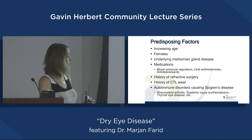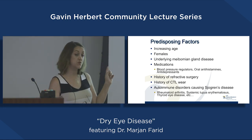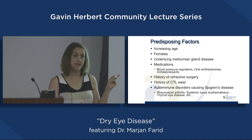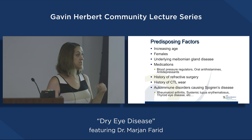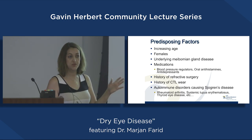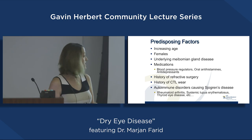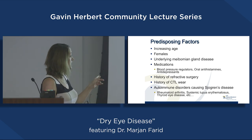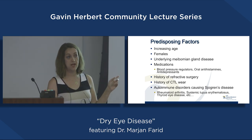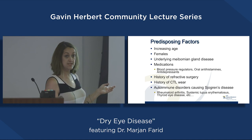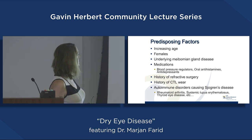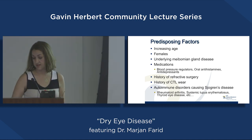Hormonal impacts are huge. Testosterone is protective against dry eye disease to some degree, but testosterone levels in both women and men decrease over time, making age a risk factor. History of contact lens wear or any eye surgery can worsen dry eye disease. Autoimmune diseases like rheumatoid arthritis, Sjögren's disease, lupus, and thyroid disease also make dry eye disease worse.